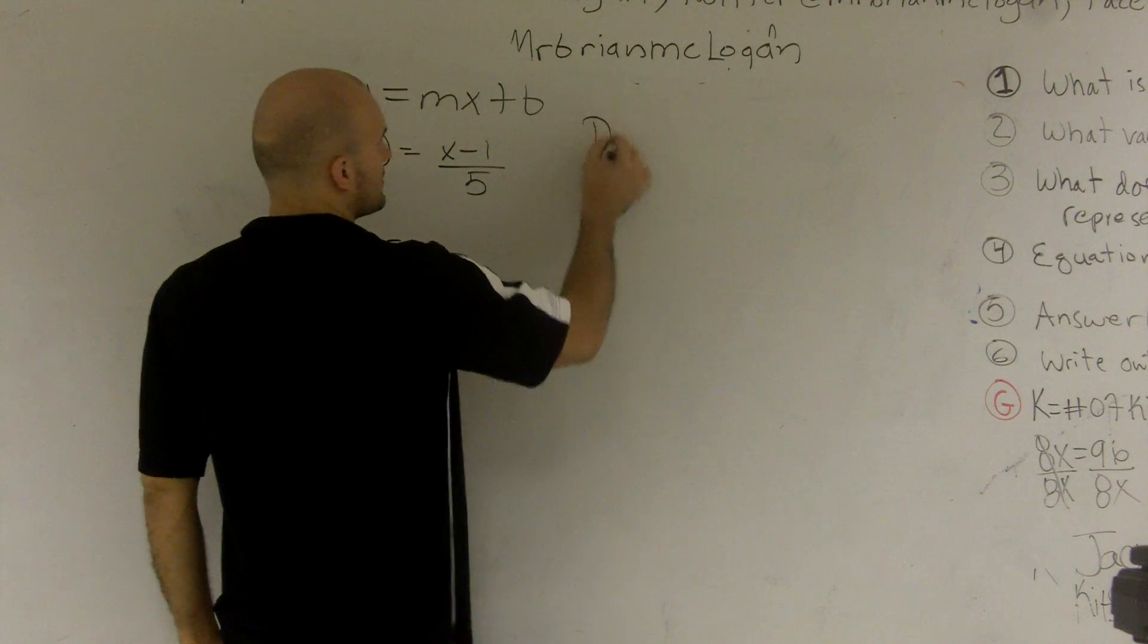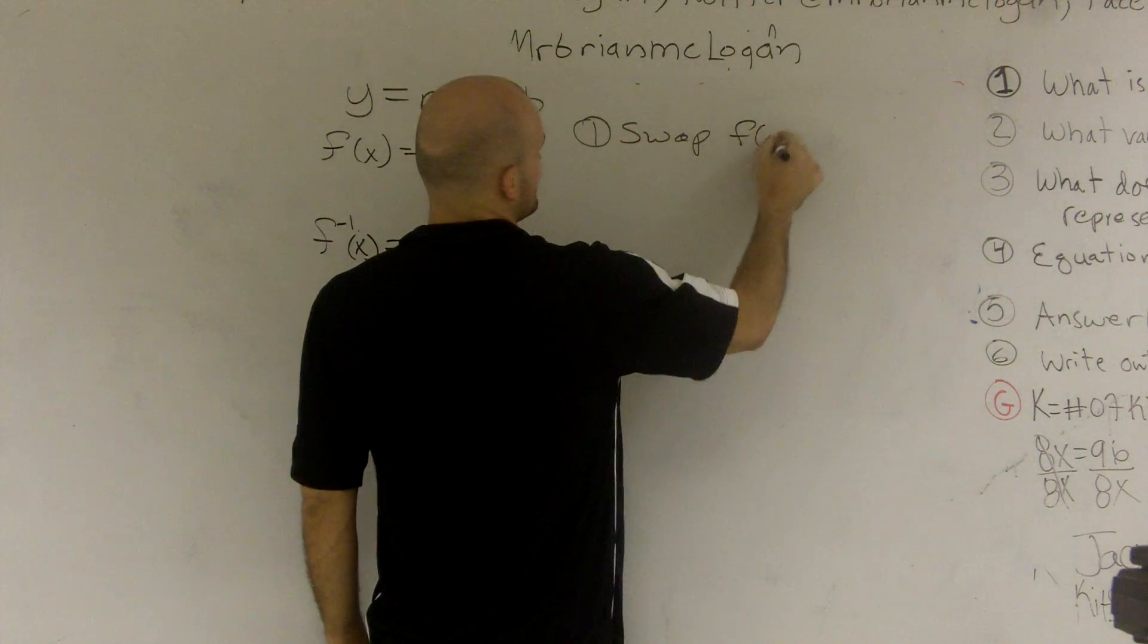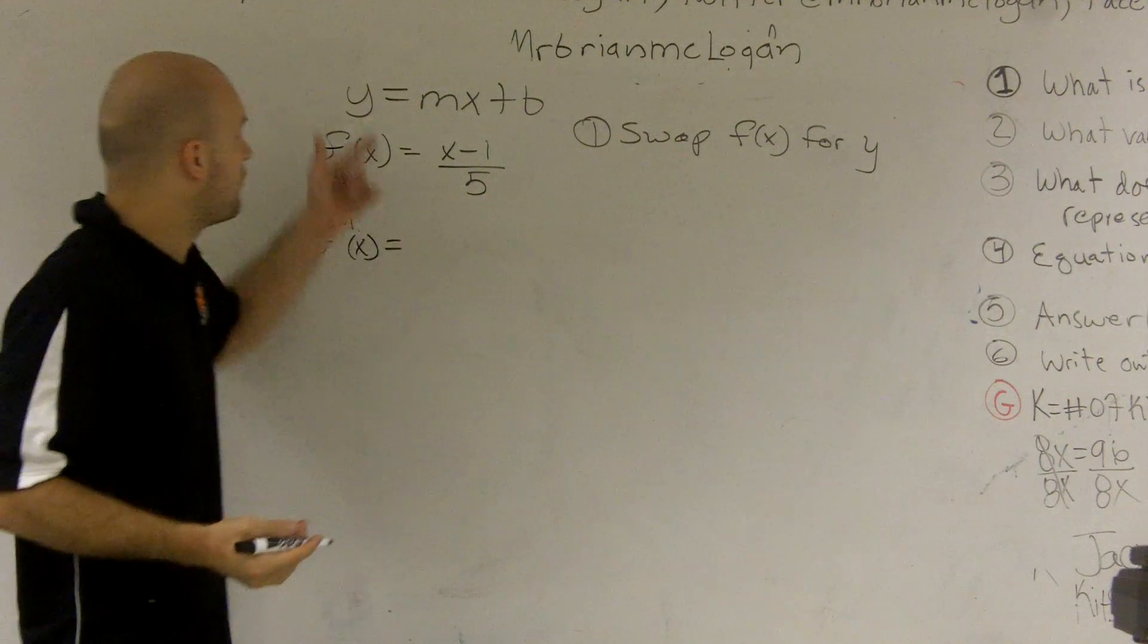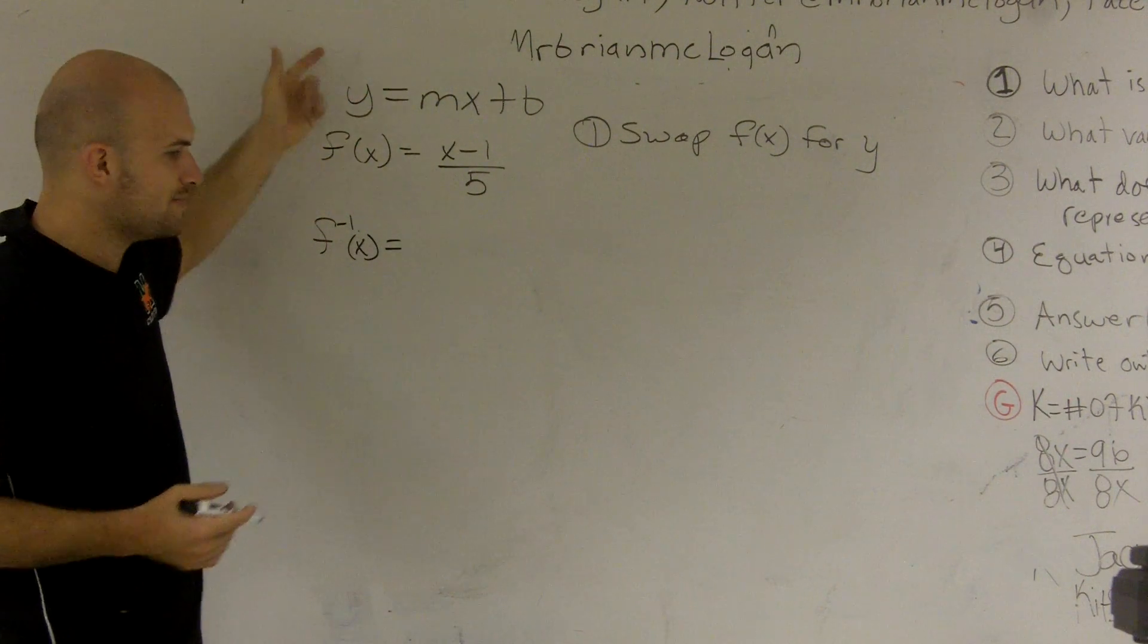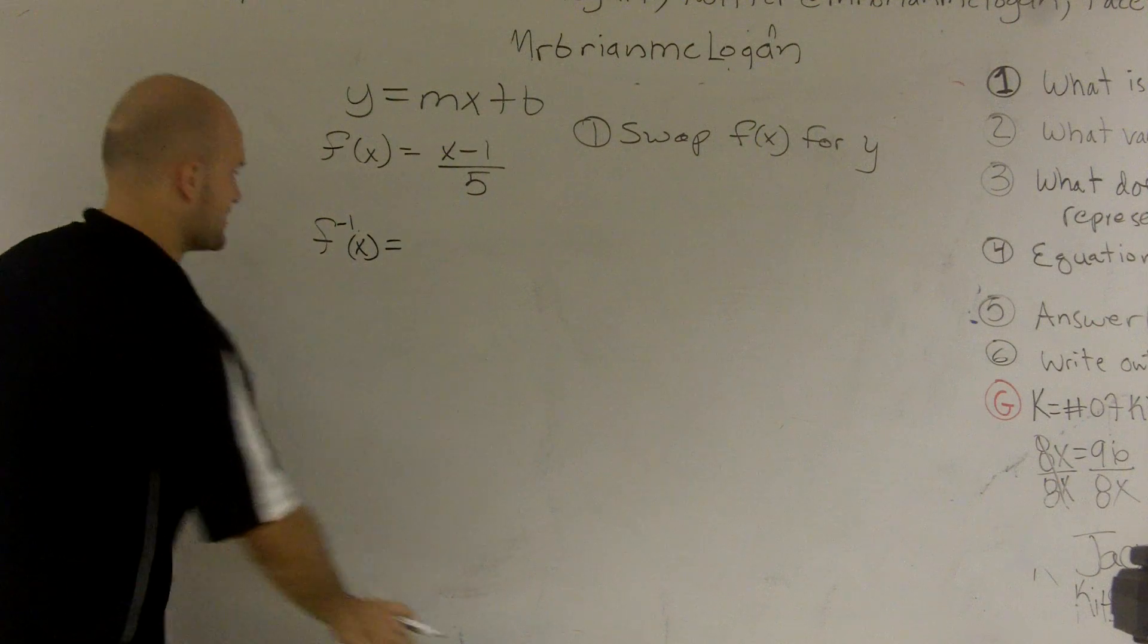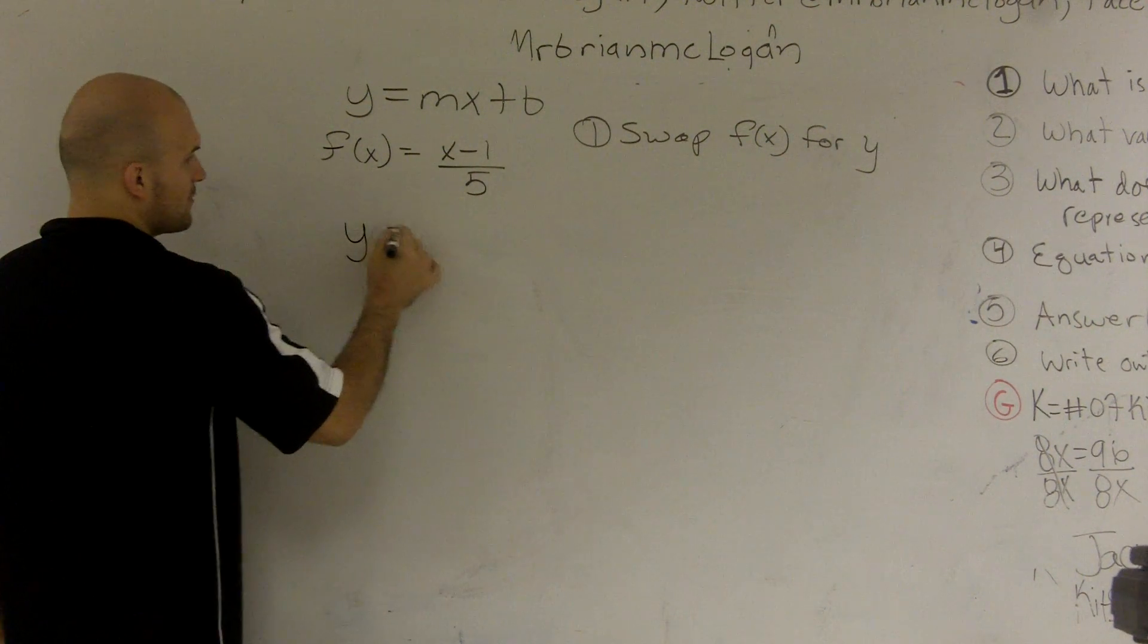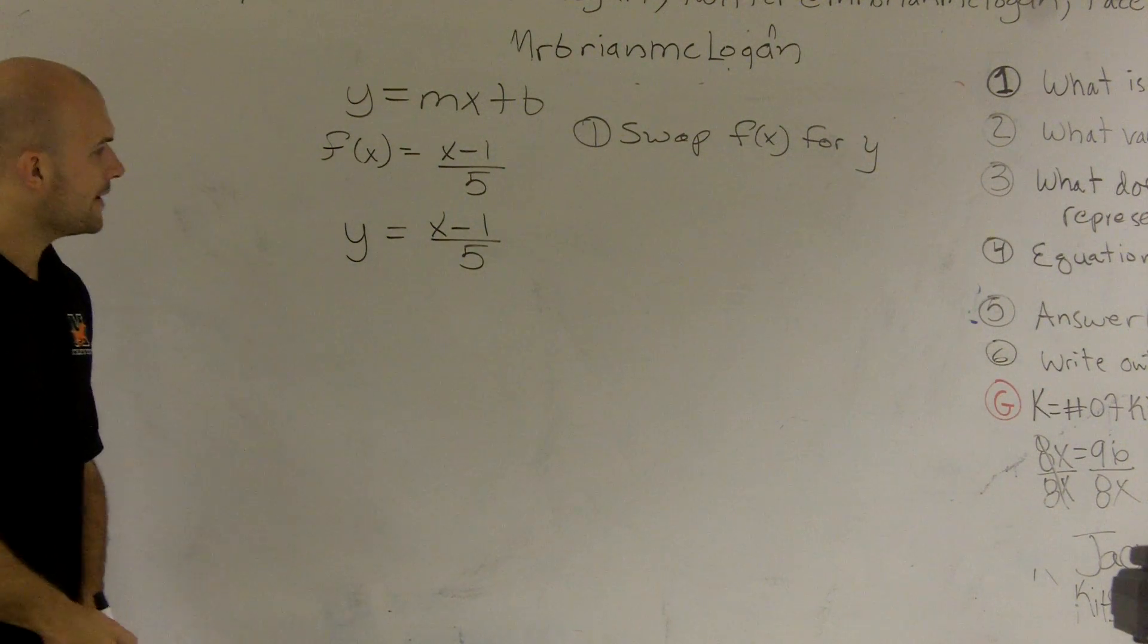So your first step, what we're going to do is we're going to swap f(x) for y. Now, they mean the same thing. y is your output value, y is your dependent value. So it's going to mean the same thing. So the first thing we're going to do is I'm just going to swap my f(x) for my y.